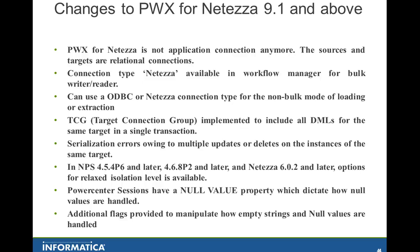An additional feature implemented is the target connection group. If you have multiple instances of the same target and they all have the same DSN — that is the data source name — the target connection group was implemented to account for any serialization errors that occur in Netezza. We issue the statements at begin transaction, then all the insert and update statements inside, and then end transaction. If there is a failure in one of those, we roll back the transaction to make sure the data doesn't get corrupted.